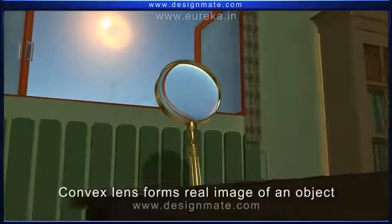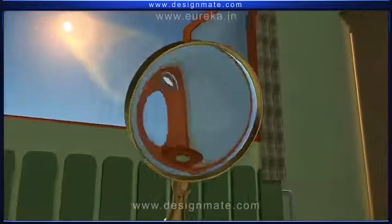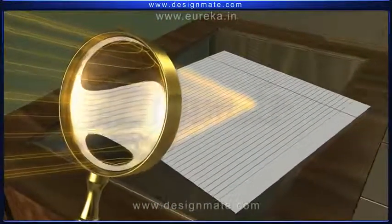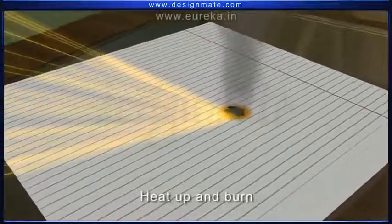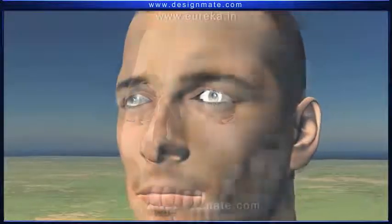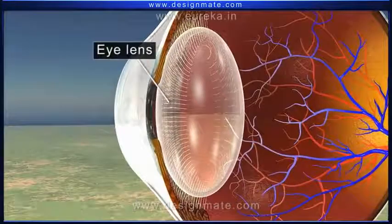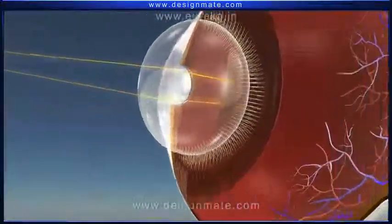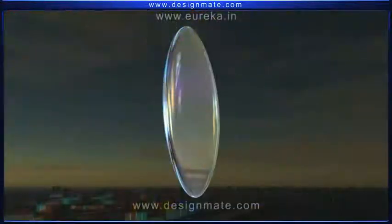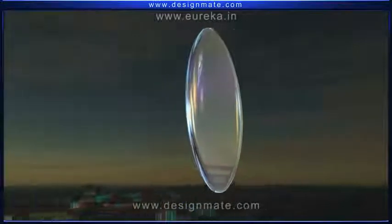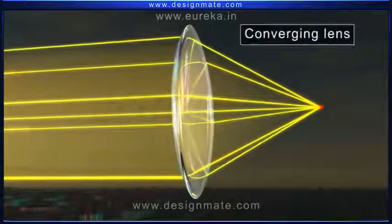The image formed by the convex lens in this case is a real image of an object. The convex lens can focus the light from the sun to a point on the other side of the lens. The concentration of light energy at this point causes the paper to heat up and burn. The lens in a human eye is convex in nature. We should not look at the sun directly, as it can damage our eyes permanently. The rays of light incident on a convex lens get converged on the other side, so it can also be called a converging lens.